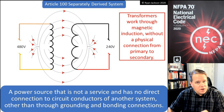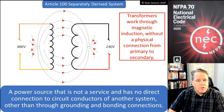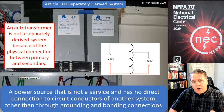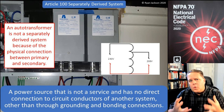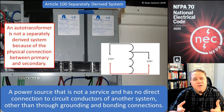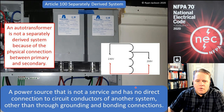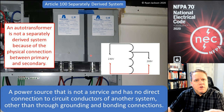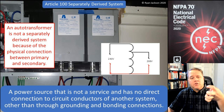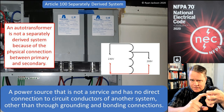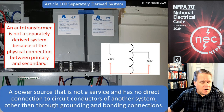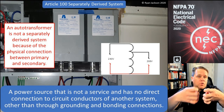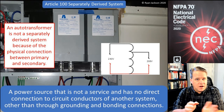A transformer is a separately derived system; however, an auto-transformer — or what we call in the field a buck-and-boost transformer — is NOT a separately derived system. With an auto-transformer, there actually is a direct connection between the primary and secondary. As shown in the diagram, you've got the 240V coil wire and you tap into a portion of it to get 208V out. Because there's a direct connection, it's not a separately derived system. A normal transformer has two separate coils connected only through magnetism.